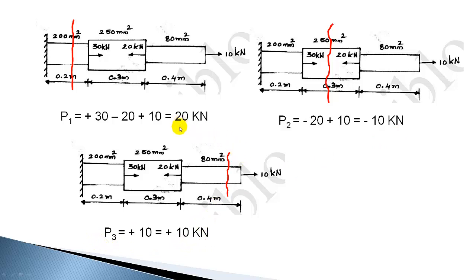The sign indicates the nature of force: plus indicates tensile force in that section, meaning the section is under stretching. The first section is tensile. The second section has a negative sign, indicating compressive force — that part is under compression and its length will reduce. The last section has a tensile force of magnitude 10 kilo Newton, so its length will increase.